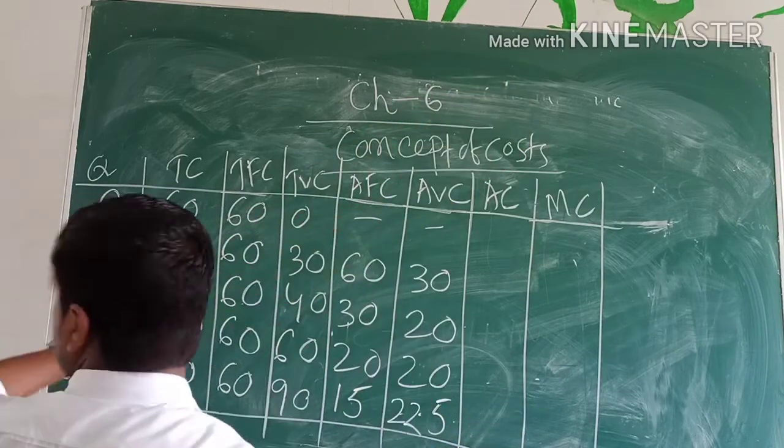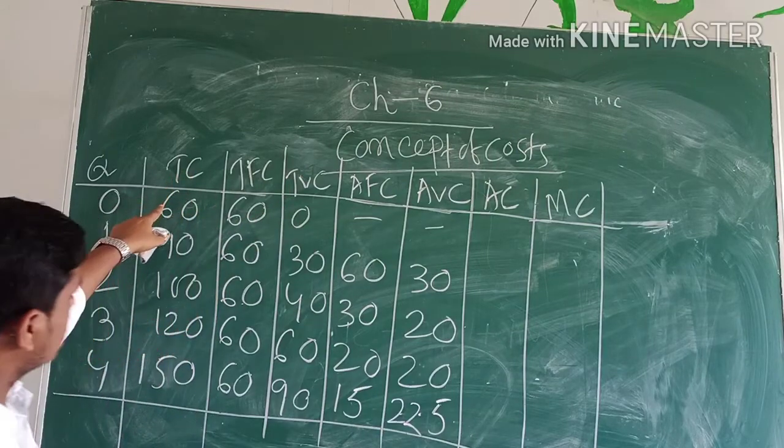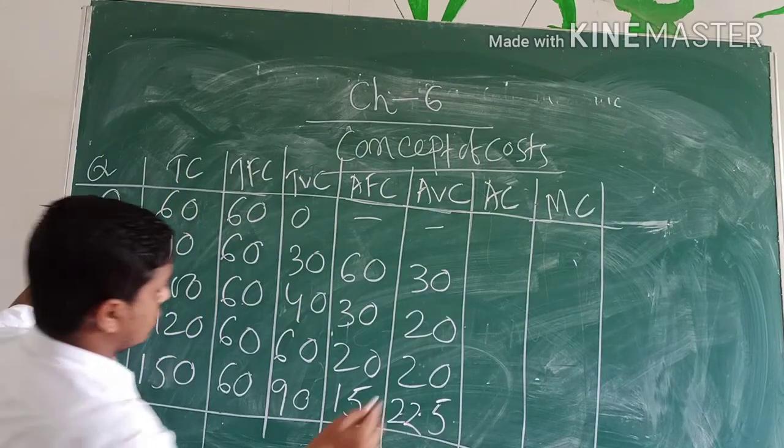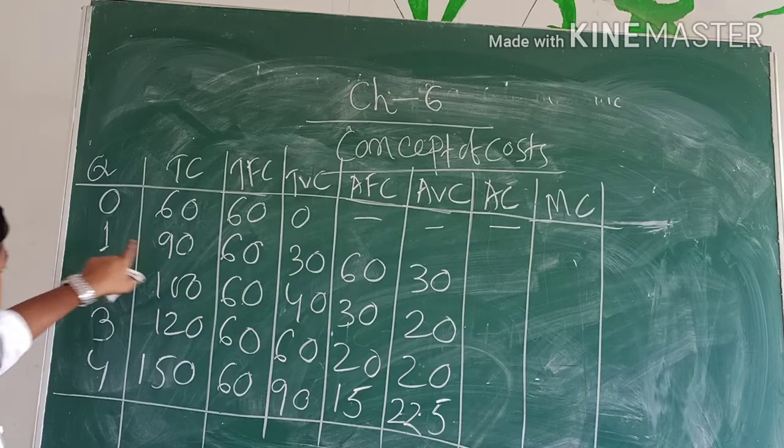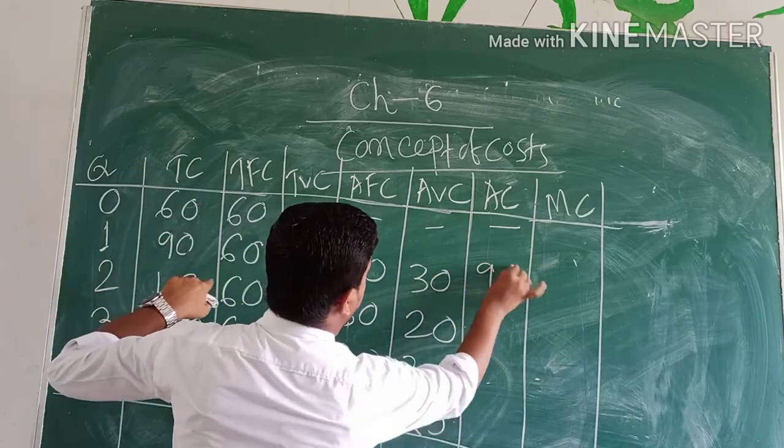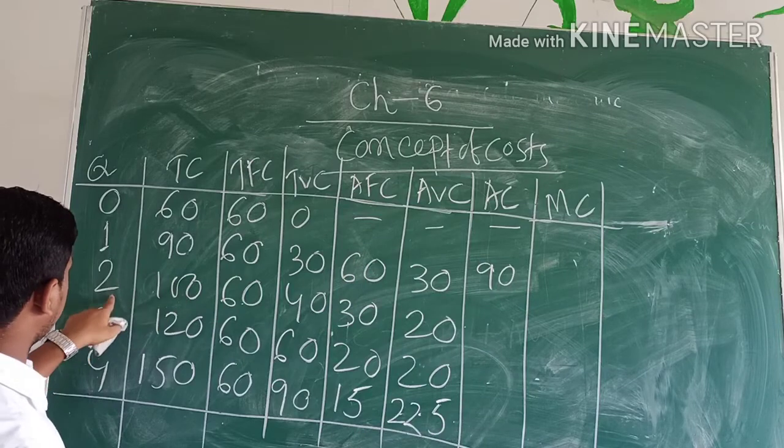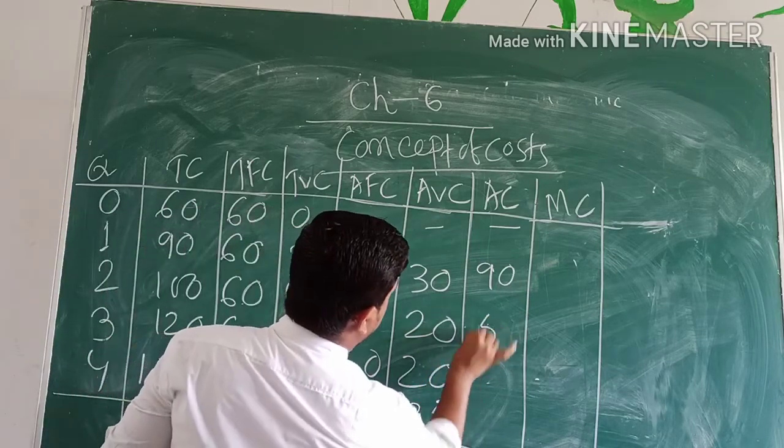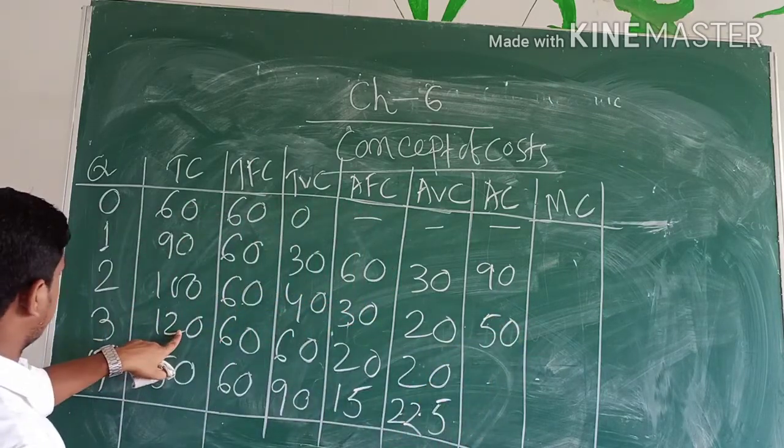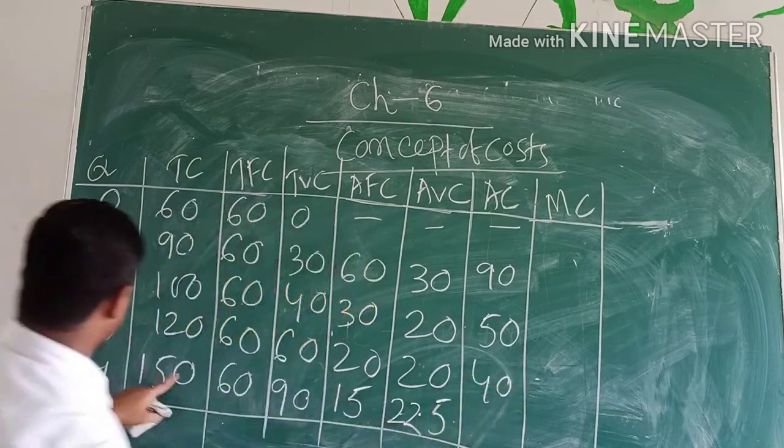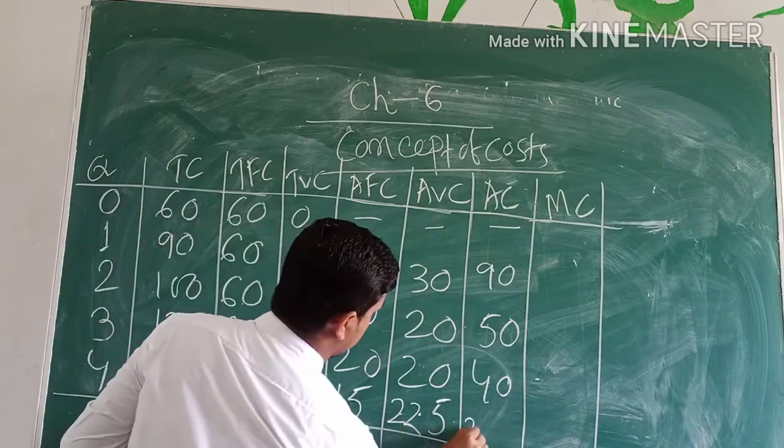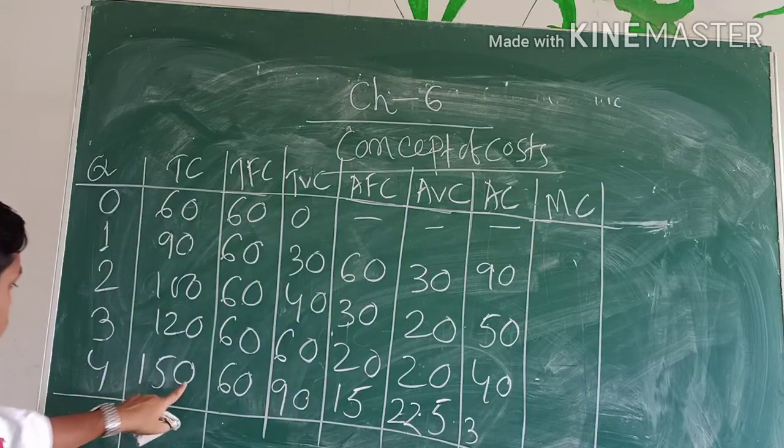Then AC is TC by Q. It will be undefined, then 90 divided by 1 is 90, next 100 divided by 2 is 50, 120 divided by 3 is 40, then 150 divided by 4 is 37.5.